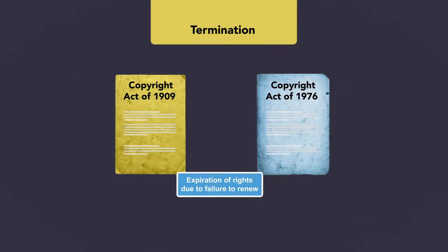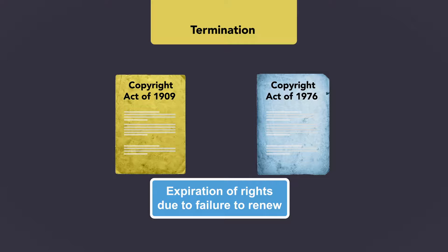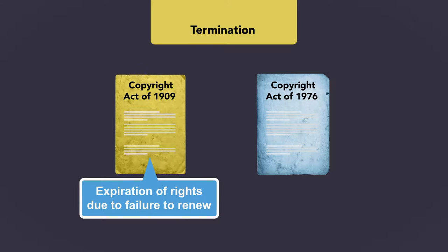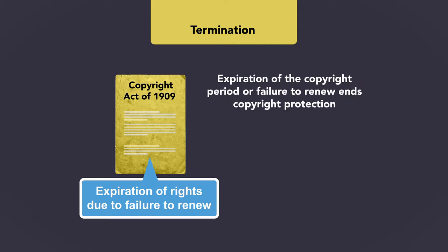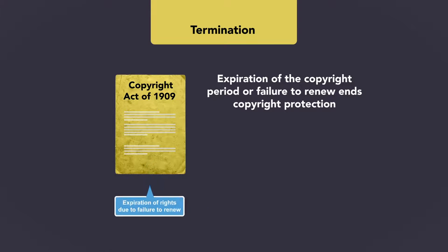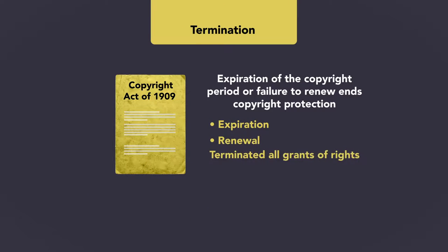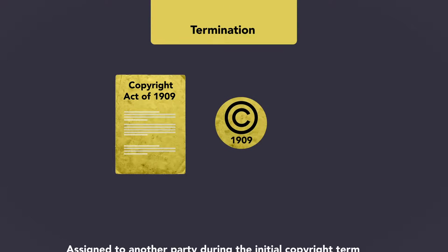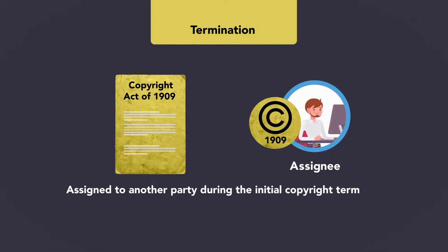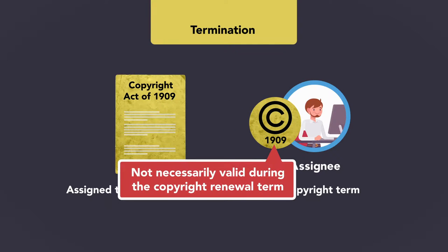Expiration of rights due to failure to renew is applicable to works first protected under the Act of 1909, but not to works protected under the Act of 1976. Expiration of the copyright period, or failure to renew, ends copyright protection. Under the 1909 Act, expiration, or even renewal, terminated all grants and rights associated with the work entered into by the copyright owner, including assignments and licenses. So if a work was protected by the 1909 Act and was assigned to another party during its initial copyright term, that assignment was not necessarily valid during the copyright renewal term.